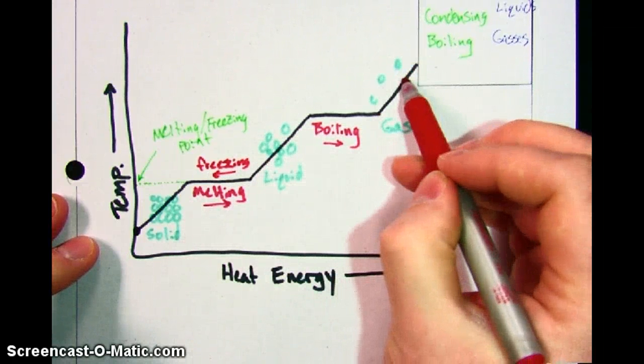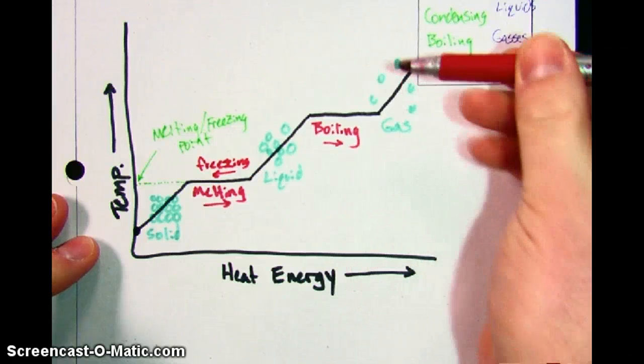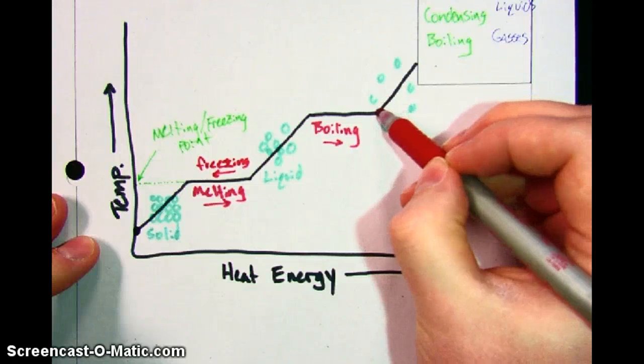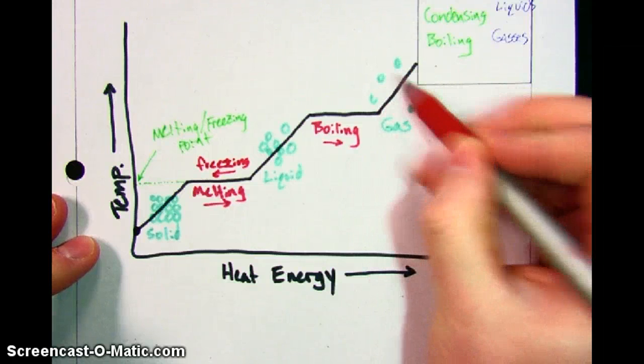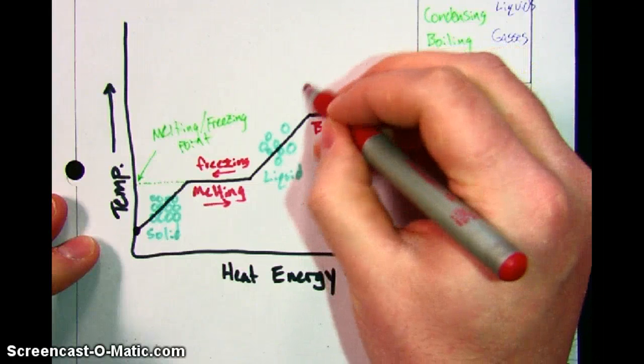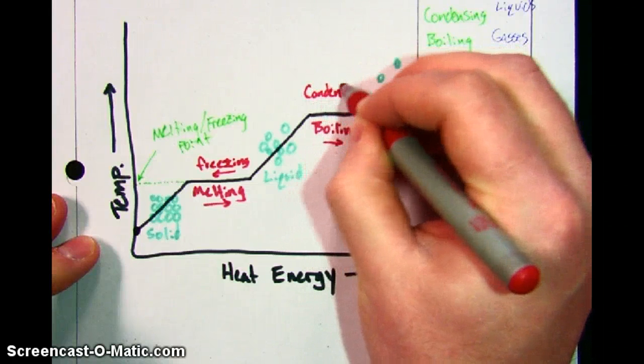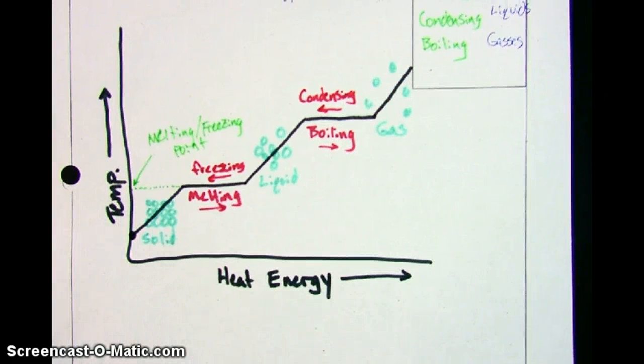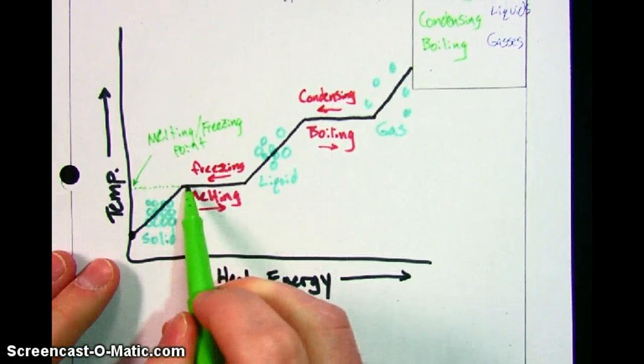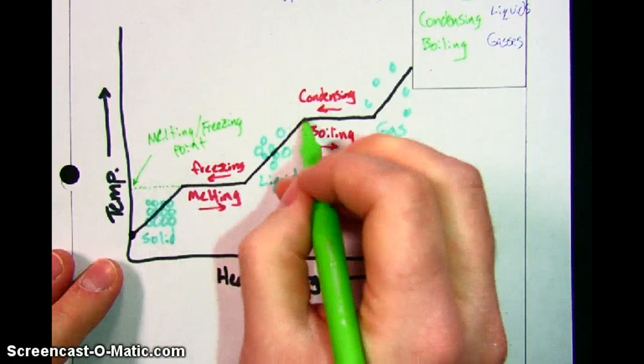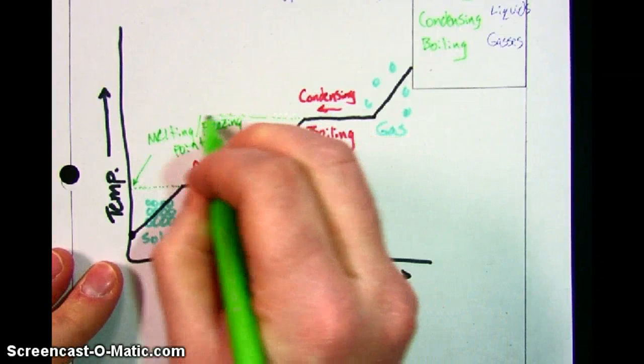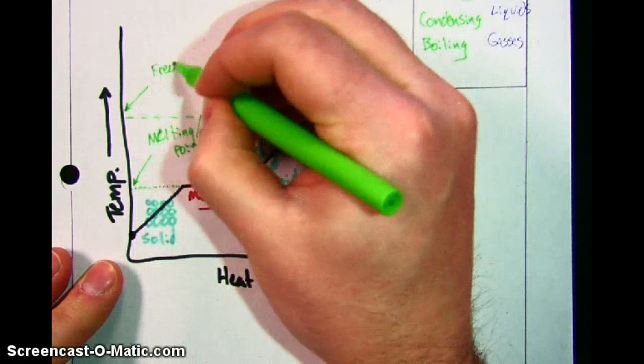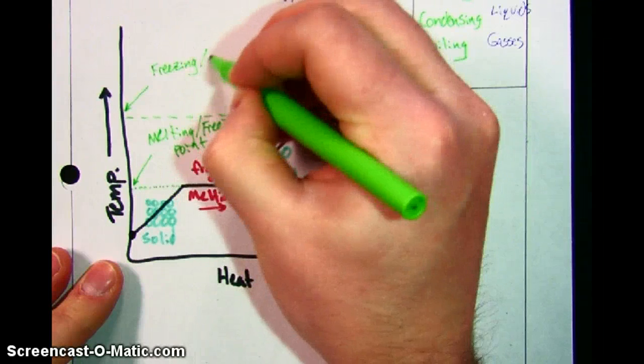Similarly with up here, if I start with a gas and remove some of the heat energy, now we're going this way on the graph again. If I'm going down this way, as soon as I hit this spot where all of the gas molecules have lost enough energy, they're going to start condensing and turning back into a liquid. So just at this same point, or at this point where we had a melting and freezing point, up here, if I follow this spot across, this is the boiling slash condensing point.